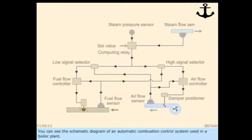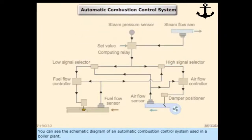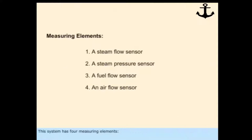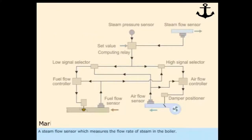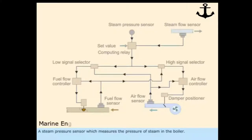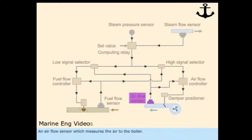You can see the schematic diagram of an automatic combustion control system used in a boiler plant. This system has four measuring elements: a steam flow sensor which measures the flow rate of steam in the boiler, a steam pressure sensor which measures the pressure of steam in the boiler, a fuel flow sensor which measures the fuel flow to the boiler burner, and an air flow sensor which measures the air flow to the boiler.